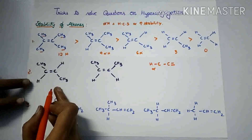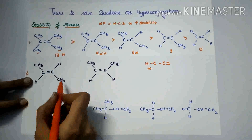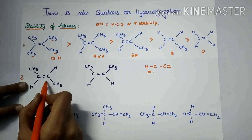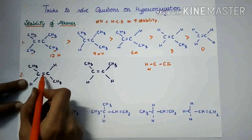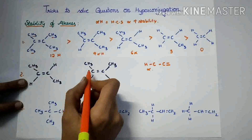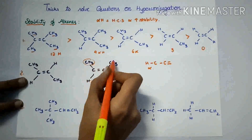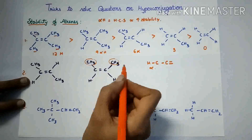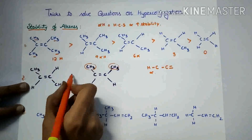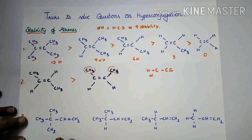Next, here this is trans-butene and this is cis-butene. Trans-butene has more stability when compared to the cis compound. Why? Because here the bulky alkyl groups show more steric repulsions in cis. So trans-butene is more stable when compared to the cis compound.